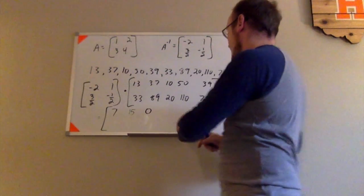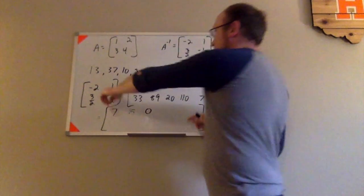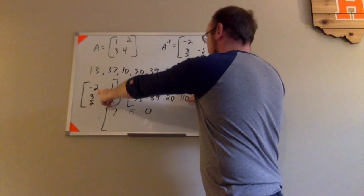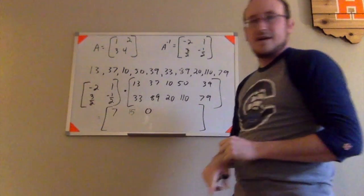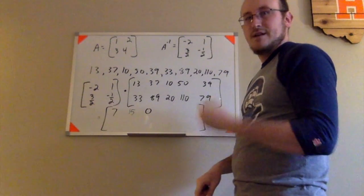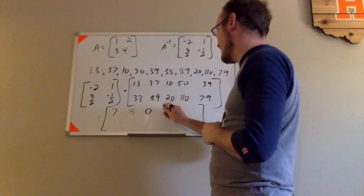First row, fourth column. I have negative 2 times 50, which is negative 100. I have 1 times 110, which is 110. Negative 100 and 110 gives me 10.